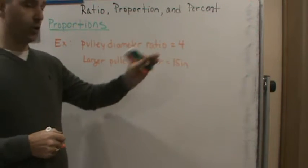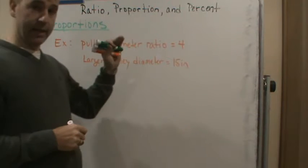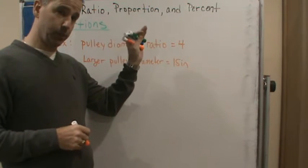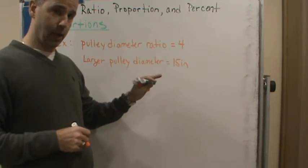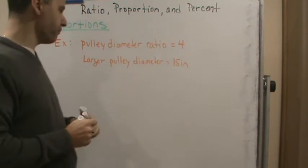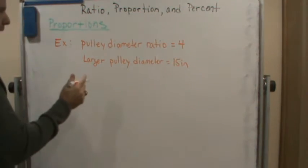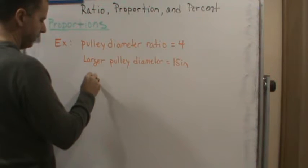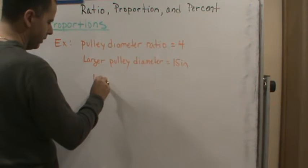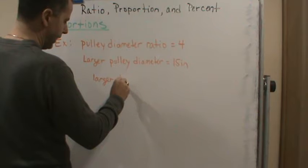We're going to use the pulley diameter ratio formula, which is the diameter of the larger pulley divided by the diameter of the smaller pulley. We know that ratio is 4, so larger diameter divided by smaller diameter equals 4.